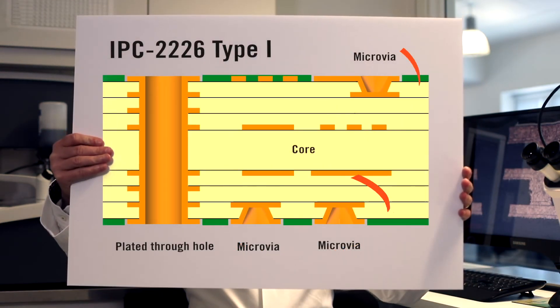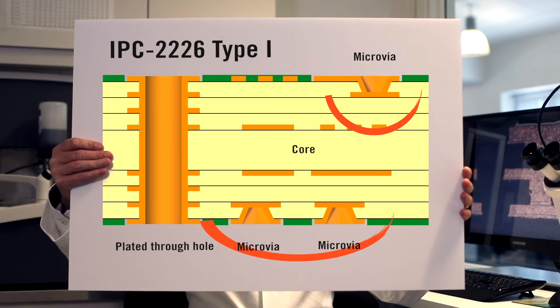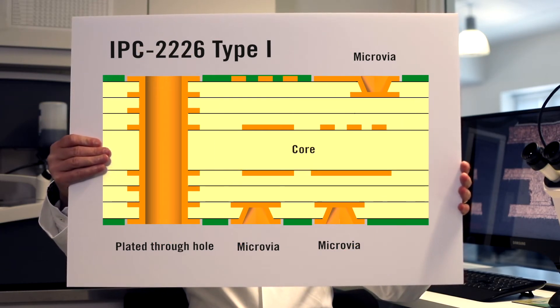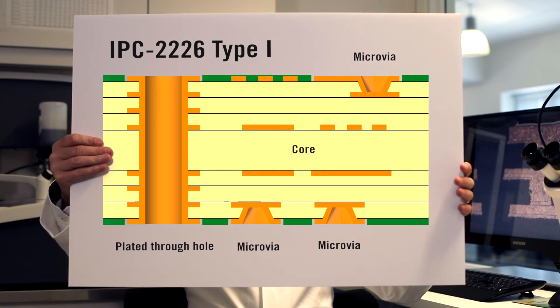Type 1 structures are those that contain a single microvia layer on either one or both sides of the core. It uses both plated microvia and PTH for interconnection. So in effect, it employs only blind via holes. They do not employ buried vias.